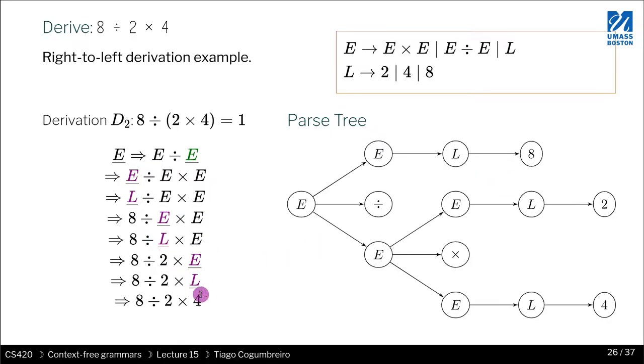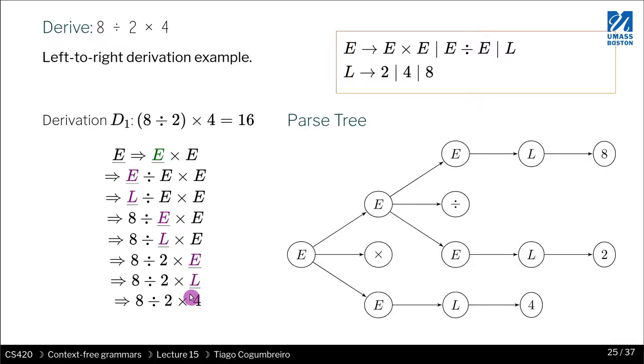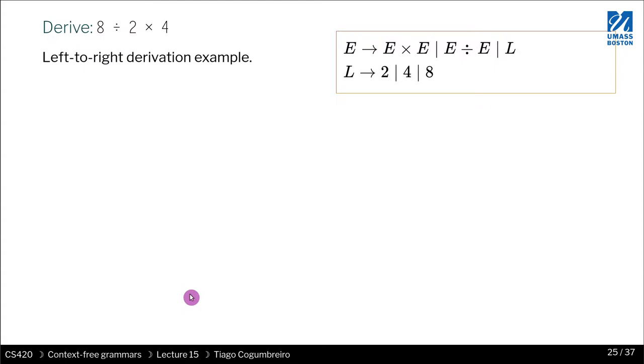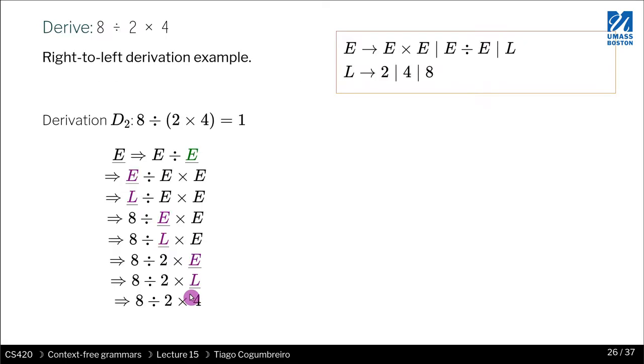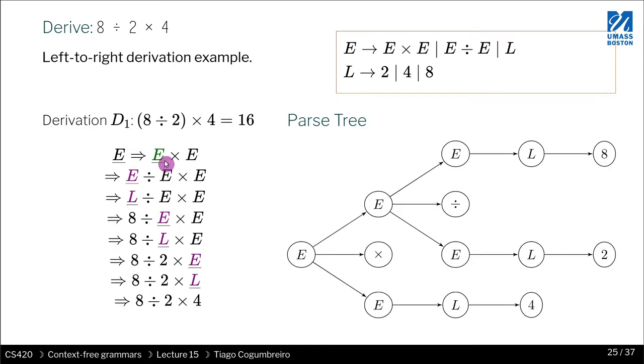This is a leftmost derivation because you're always replacing the leftmost variable. But in another example, this is not a leftmost derivation because we derived the right-hand side first. This is a leftmost derivation because we start from E and always go left.